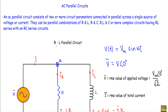In this video I will talk about the RL parallel circuit. I will show you how to express the admittance Y in terms of circuit parameters, how to express the total impedance Z in terms of the conductance G and the inductive susceptance BL, and finally I will show you the phasor diagram or current triangle and the admittance triangle of this RL parallel circuit.